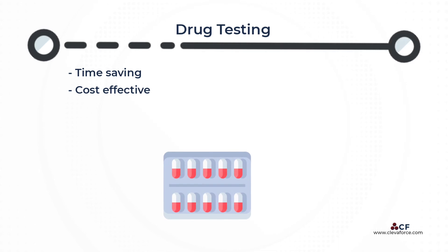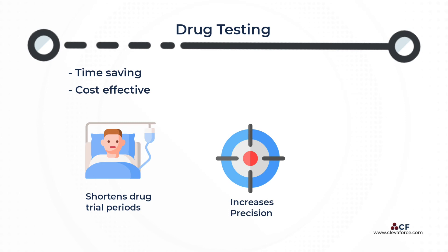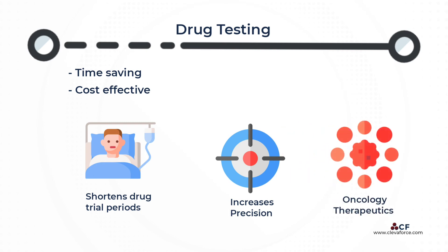3D cell culture is a cost-effective and time-saving culture technique for drug screening because it significantly shortens drug trial periods while increasing precision or targeting. For example, cancer therapeutics are improving thanks to microengineering applications like organs-on-chips, which improve the benefit-risk balance by more precisely targeting a specific cell type, a defined biomechanism, or a precise receptor.